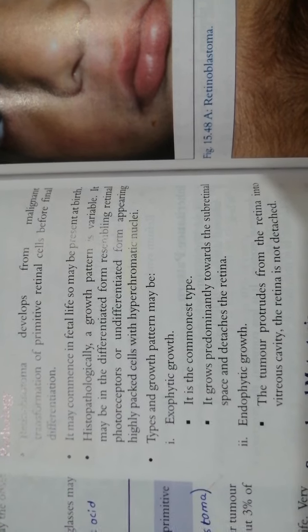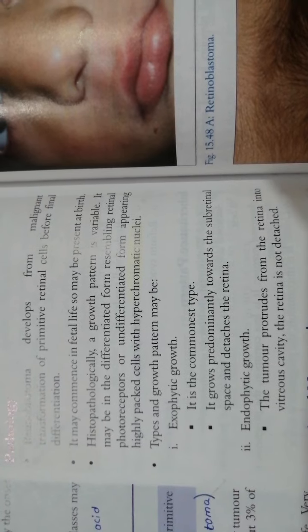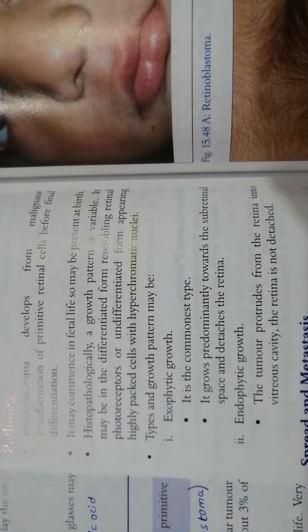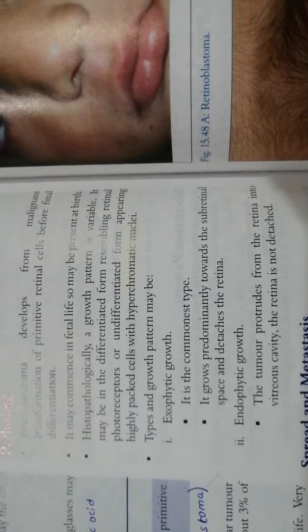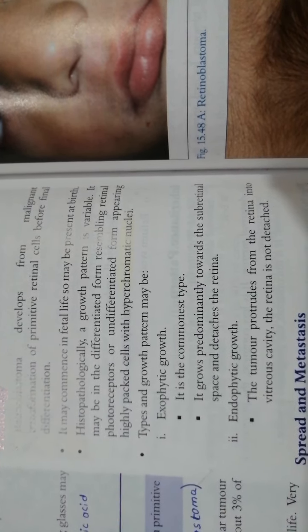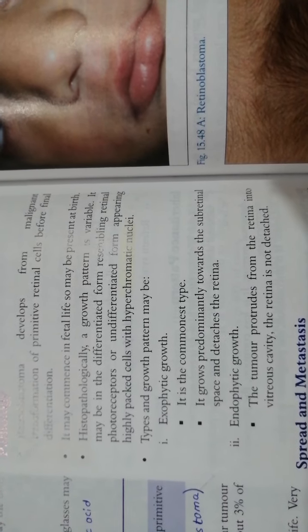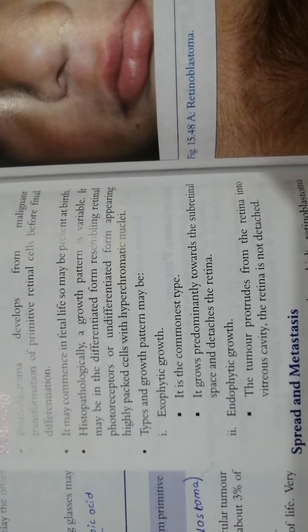In addition to this, growth pattern also shows variability. We use two terms: exophytic and endophytic. The normal eyeball has the most outside layer of sclera, inside the choroid and the retina. The retina is the inner most lining of the eyeball and the vitreous cavity is filled with vitreous humor.